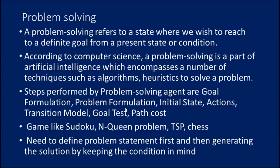Several examples for this problem solving technique include Sudoku, the 8-coin problem, the Travelling Salesman problem, and Chess. It needs to define a problem statement first and then generate a solution by keeping the conditions in mind. There are two types of problems: toy problems and real world problems. A toy problem is a concise and exact description used by researchers to compare the performance of algorithms. A real world problem requires a solution and, unlike a toy problem, does not depend on a single description but needs a general formulation.